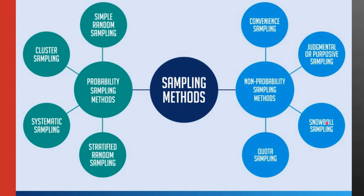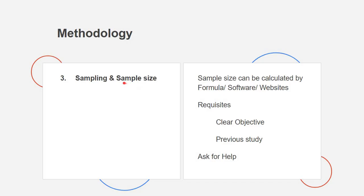The second component is sample size. While deciding the sample size, the researcher should be clear about their objective, study design and should have a similar reference study. Then sample size can be calculated using simple formula. Softwares and online websites also can help in this. If you are not able to calculate on your own, you can ask for help.